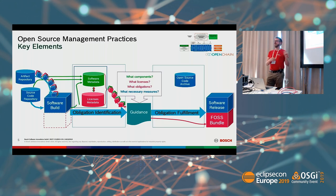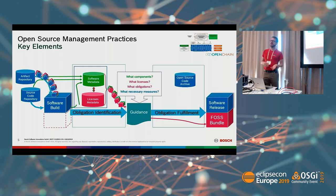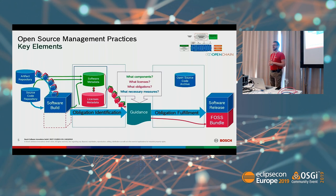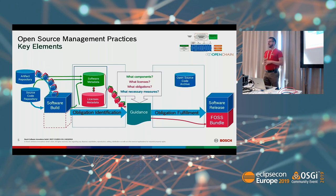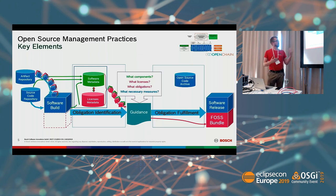With this information, you fulfill obligations, typically in the form of a FOSS compliance bundle. Developers get either confirmation that everything is fine and the product can be shipped, or a notification that something is wrong and needs checking. There is typically a compliance office responsible for providing this information and support to enable people to do their job.